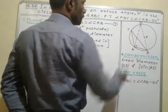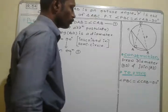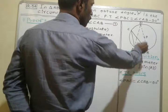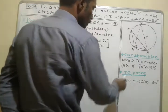This is the circle with center P and angle CAB is an obtuse angle. Here's the construction: draw diameter BD and join AD.